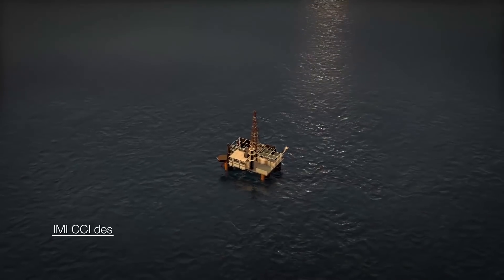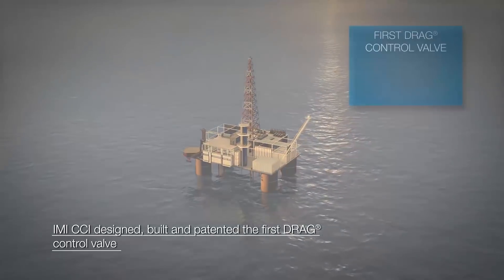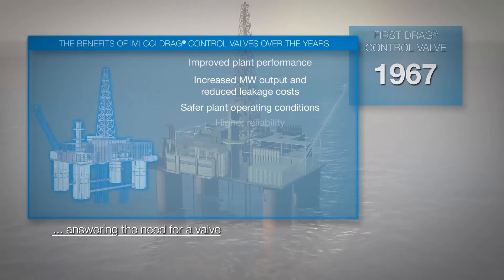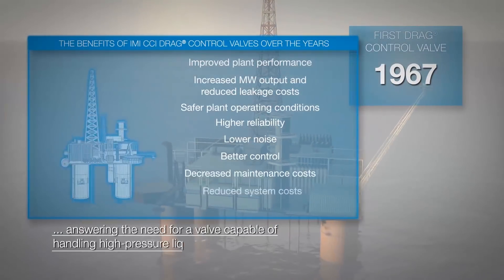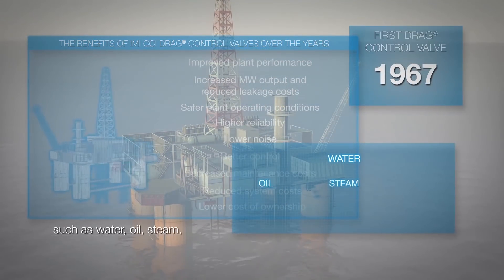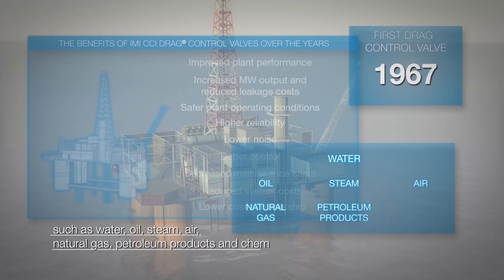IMI CCI designed, built and patented the first drag control valve in 1967, answering the need for a valve capable of handling high-pressure liquids and gases such as water, oil, steam, air, natural gas, petroleum products and chemicals.